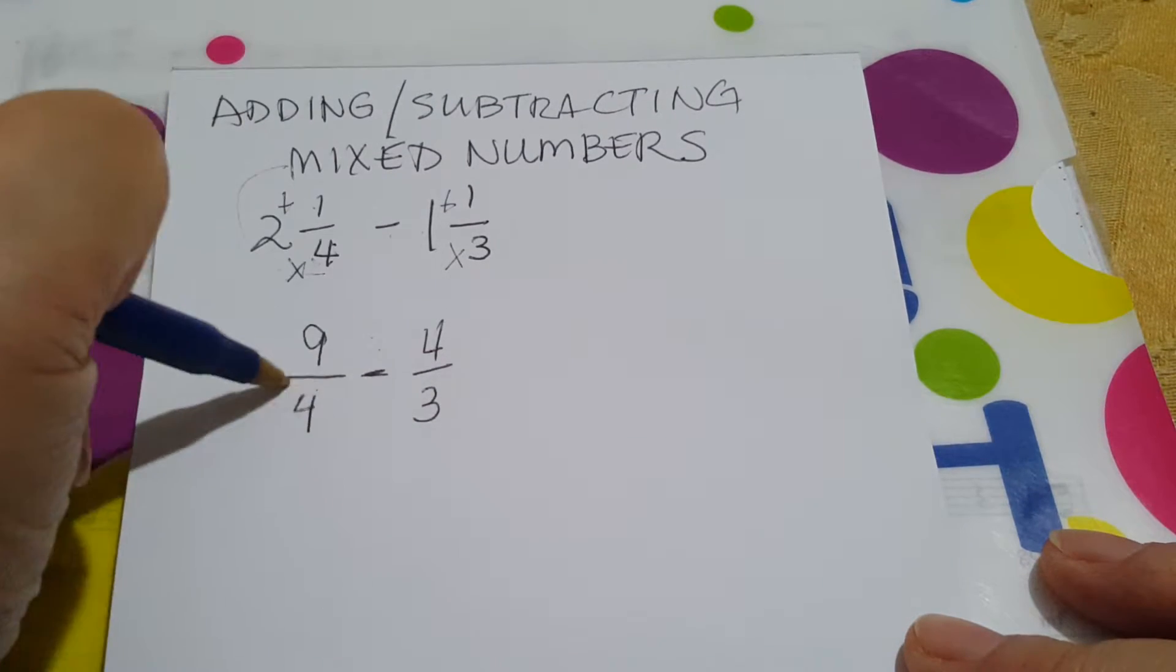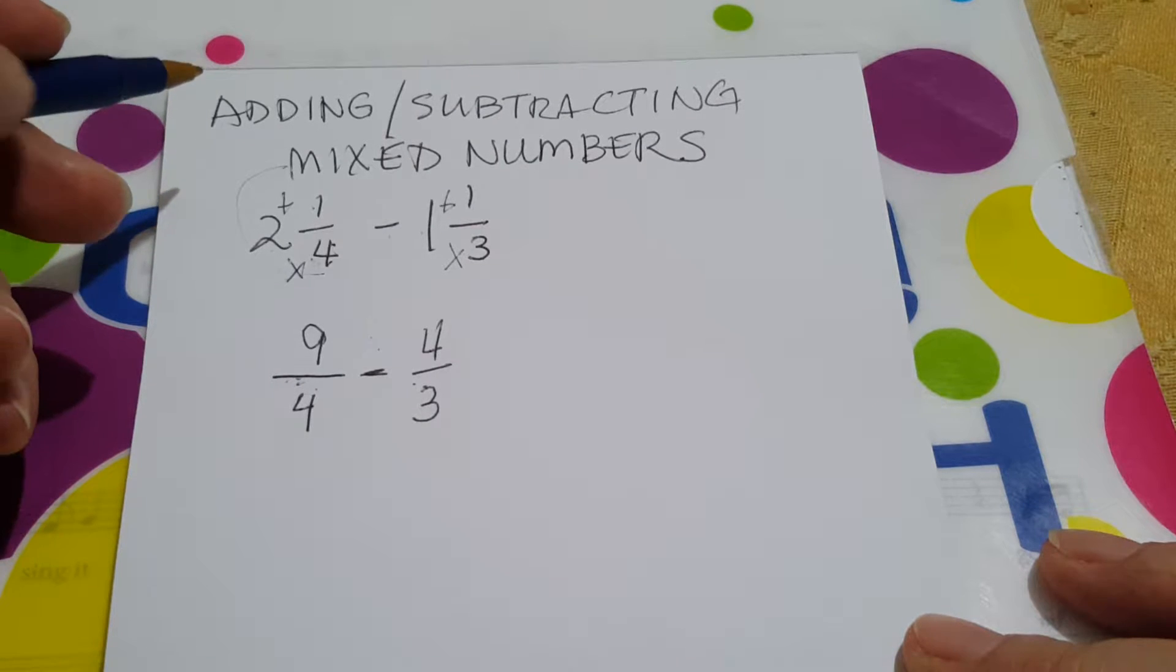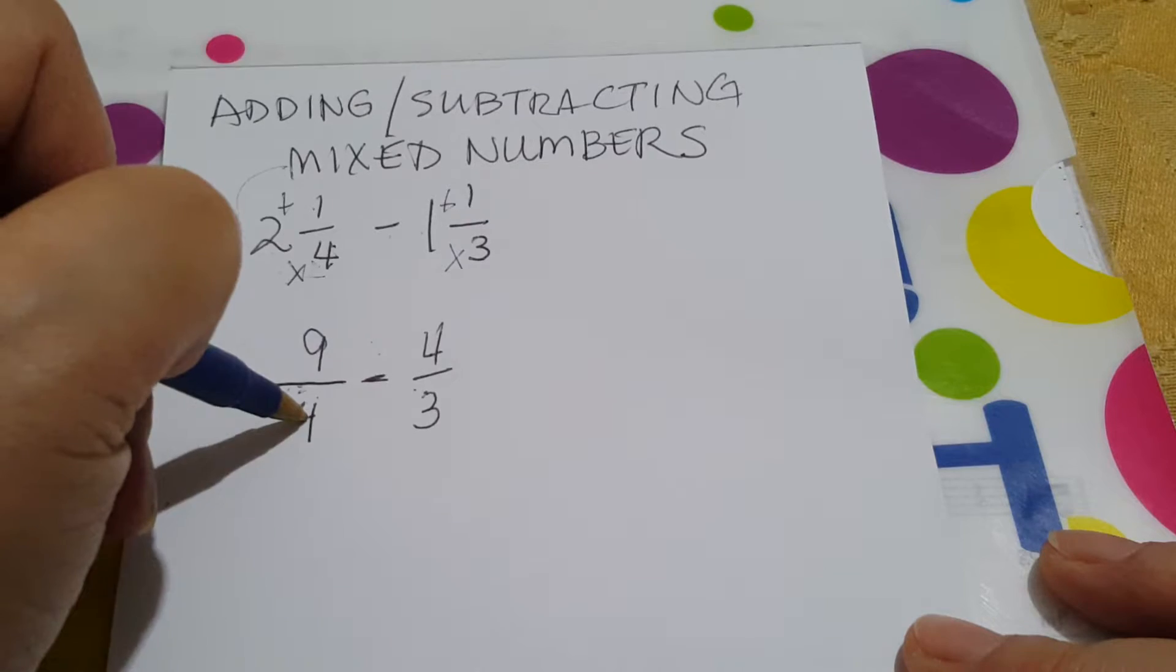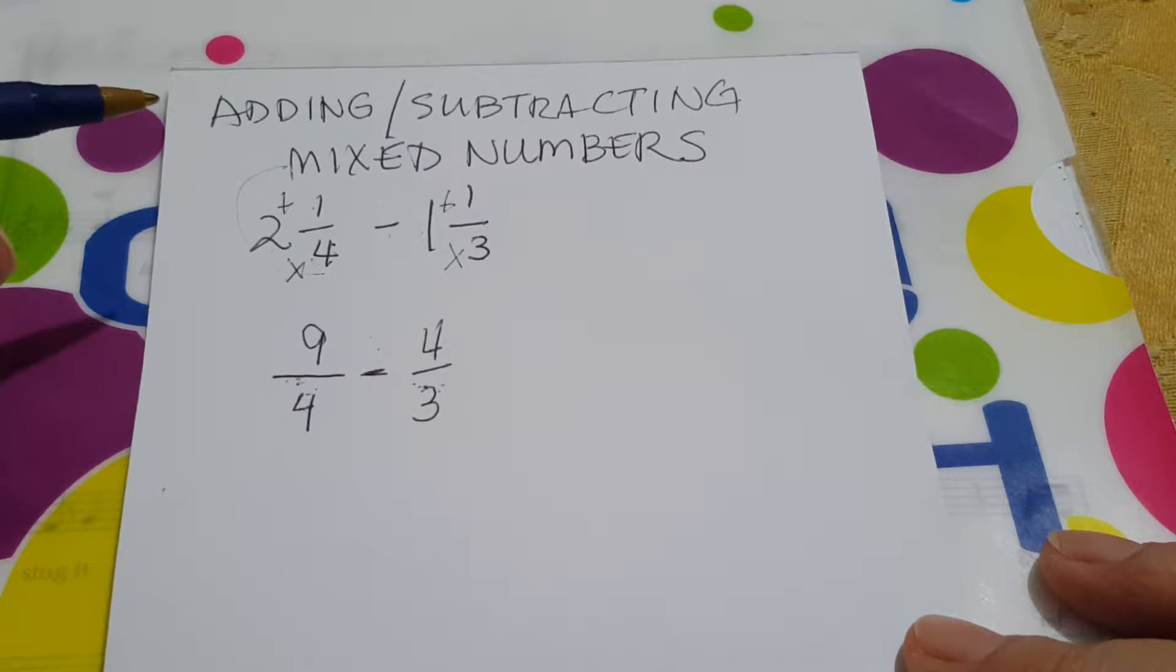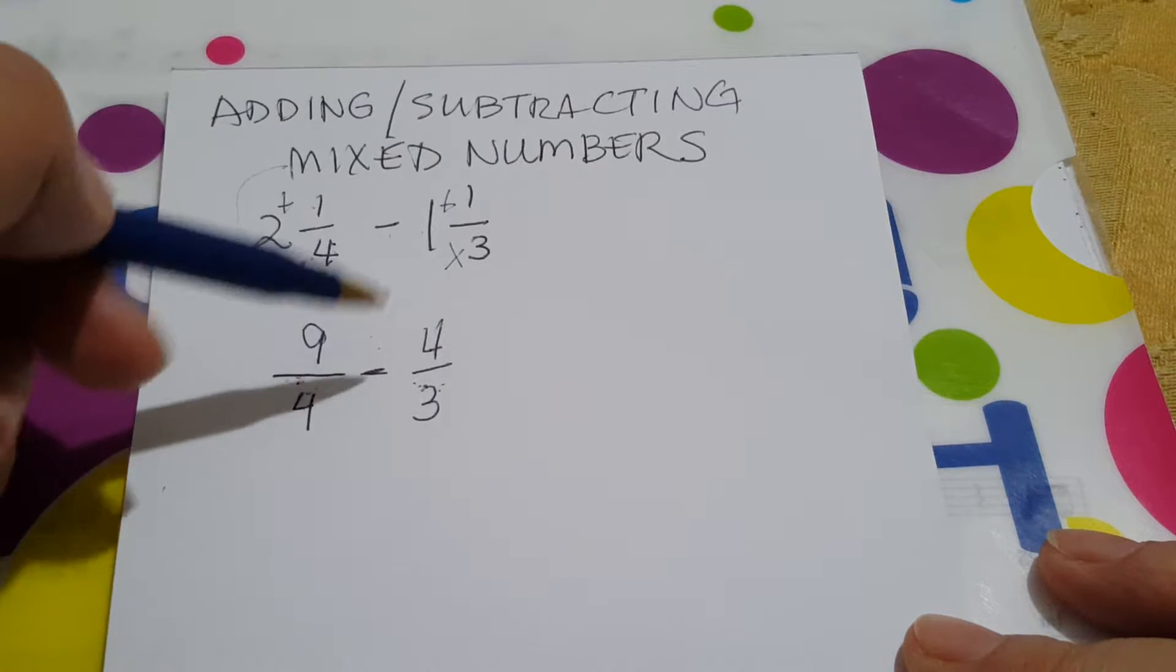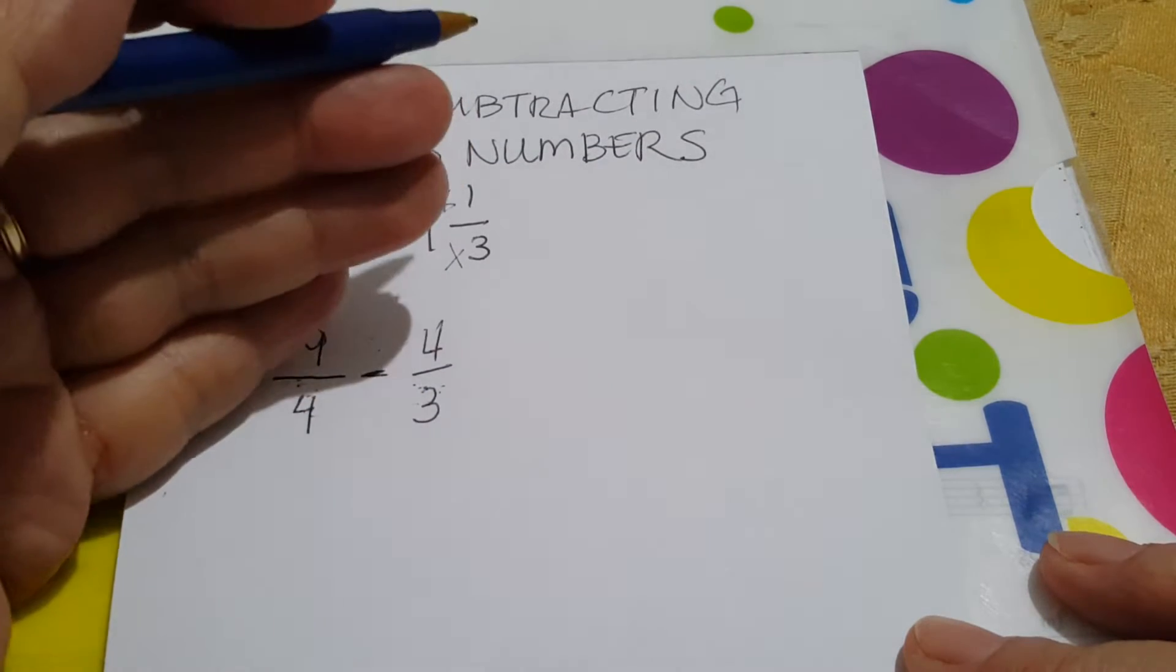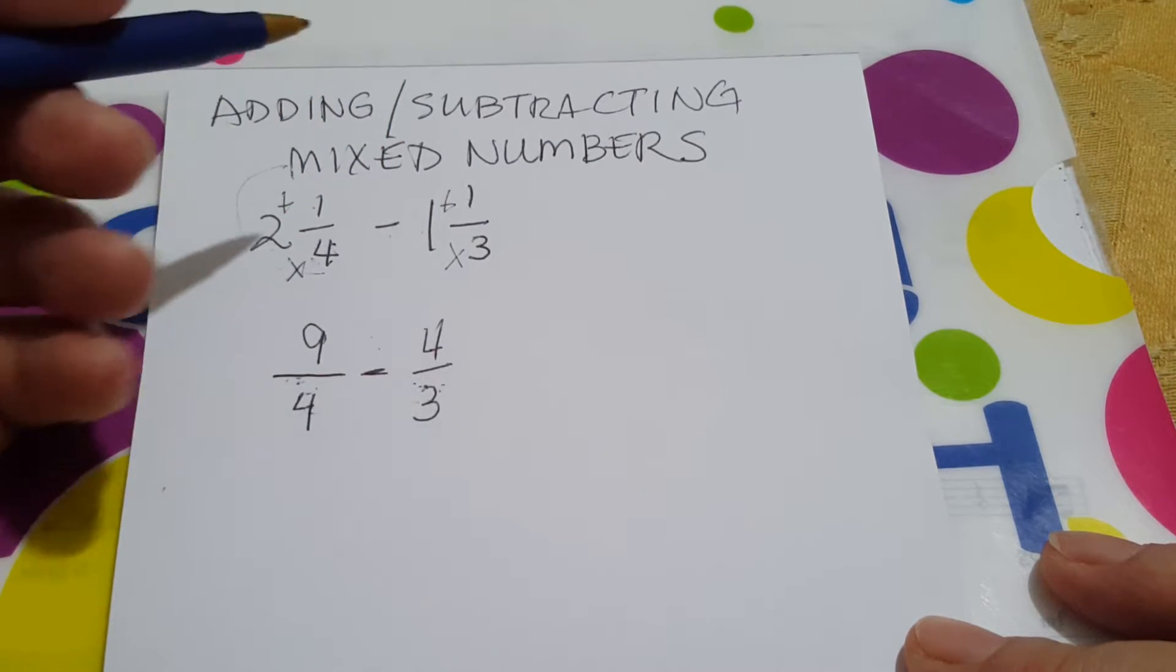Now, they are unlike fractions. So we need to make them into like fractions by looking for the least common multiple. Again, we said that in order to save time, you can just multiply the denominator and later on make sure that you put your answer into lowest terms or simple form.